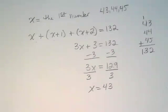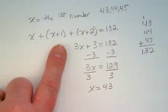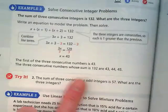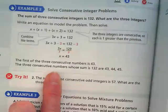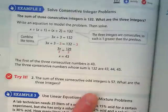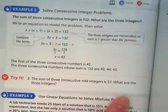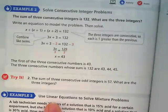So as I'm setting this up, it's not going to be x plus 1 for the second number. It's going to be x plus 2. Okay? So I'm going to let you guys set this up. The sum of three consecutive odd integers is 57. What are the three integers? Set up your equation and see if you can find it.